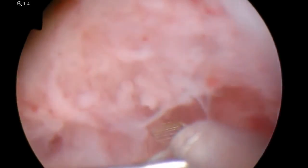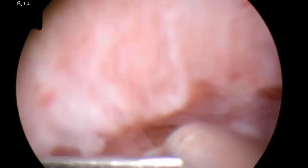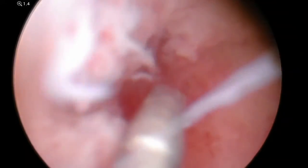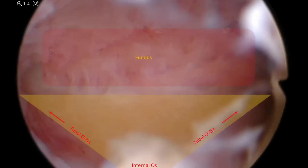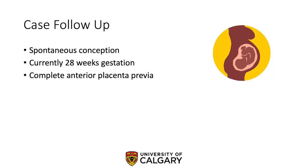Notably, at the end of this procedure, there appears to be much more functional endometrium. A pediatric Foley catheter is then placed at the end of the procedure for 7 days, along with 21 days of estradiol and 7 days of medroxyprogesterone acetate. Three months following the procedure, our patient spontaneously conceived. She is currently 28 weeks gestation with a complete anterior placenta previa and no evidence of placenta accreta.